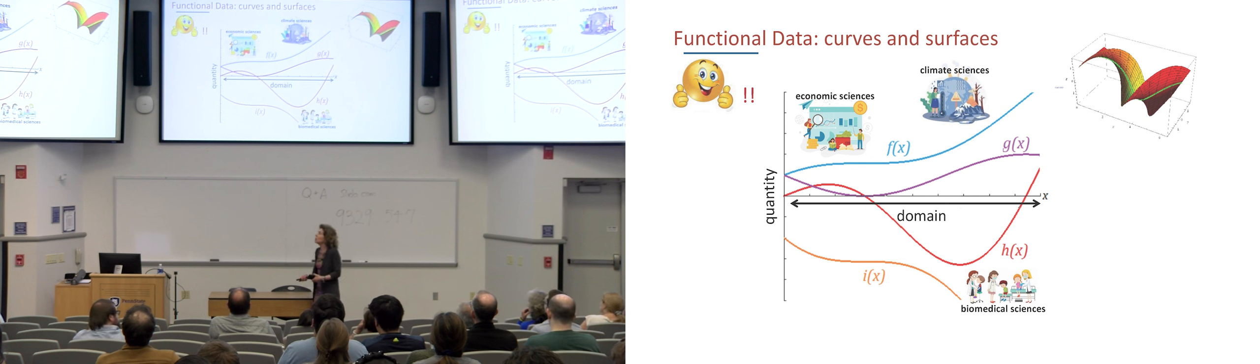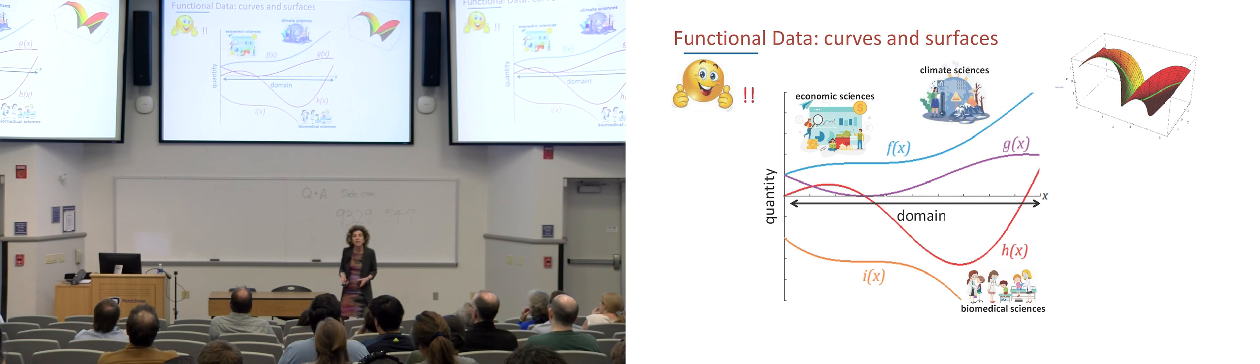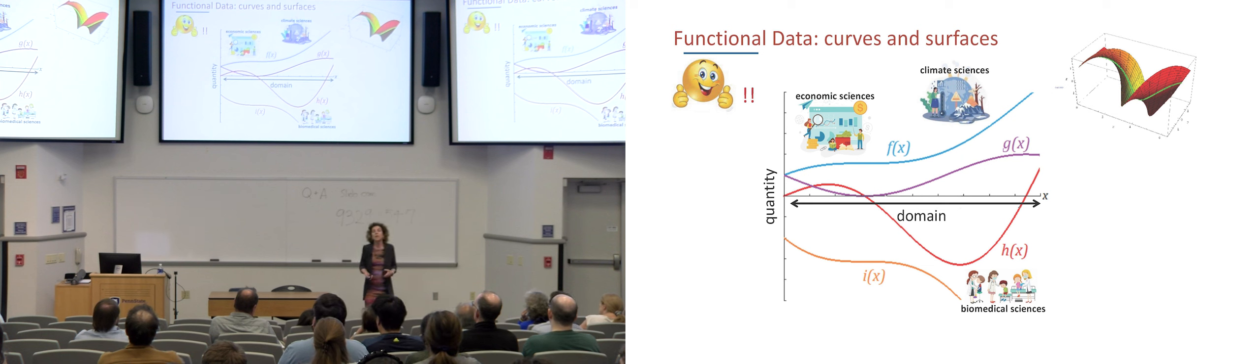So, all of these are examples of what we call functional data. And when you think of a functional datum, you should think of a subject, a statistical unit, if you will, on whom we measure a quantity. This is what I'm mapping on the vertical axis, as it unfolds on a continuous domain that I'm representing on the horizontal axis. This domain could be time. It's the easiest way to think about this.